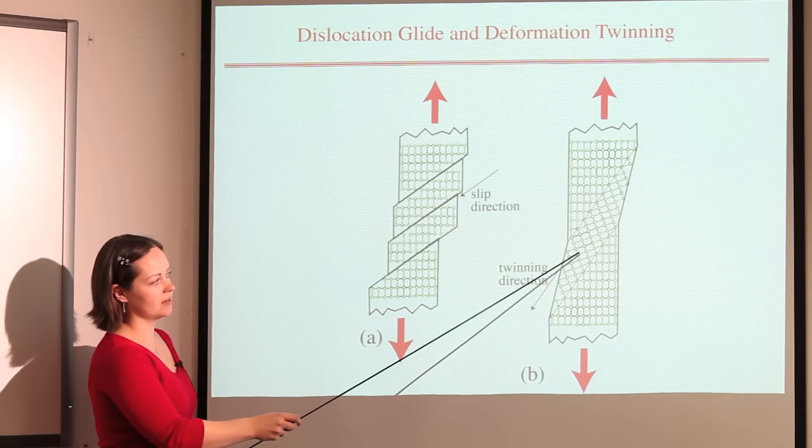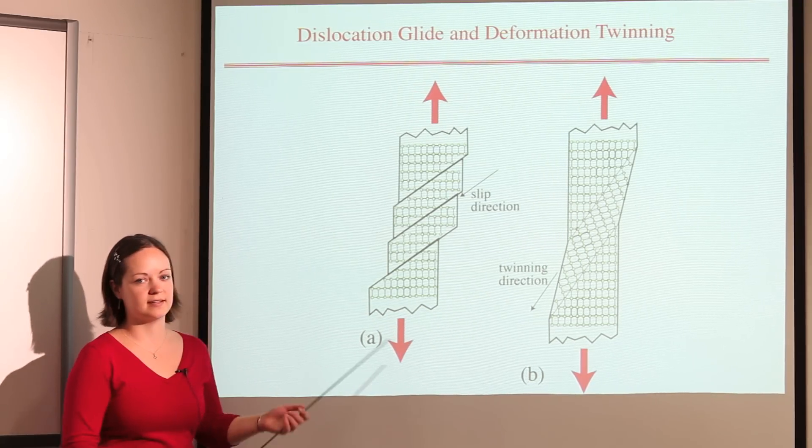It's worth pointing out that if this structure was different to the parent structure, then this would have been a martensitic transformation.